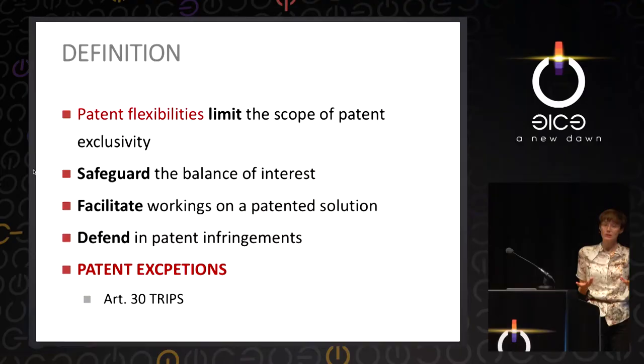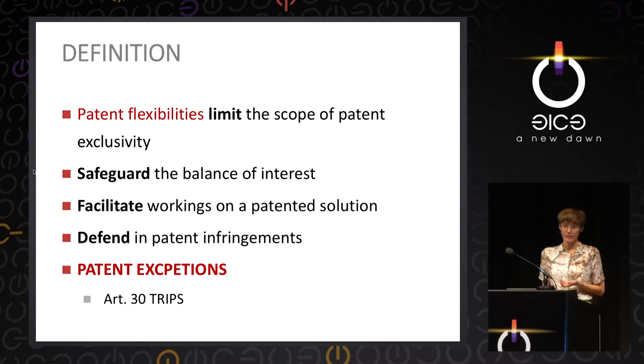This is the background against which I analyze patent flexibilities. What are patent flexibilities? Patent flexibilities are legal tools that limit the scope of patent exclusivity. Their main purpose is to safeguard the balance of interests — the interest of the patent holder and the interest of society, third parties, and users.